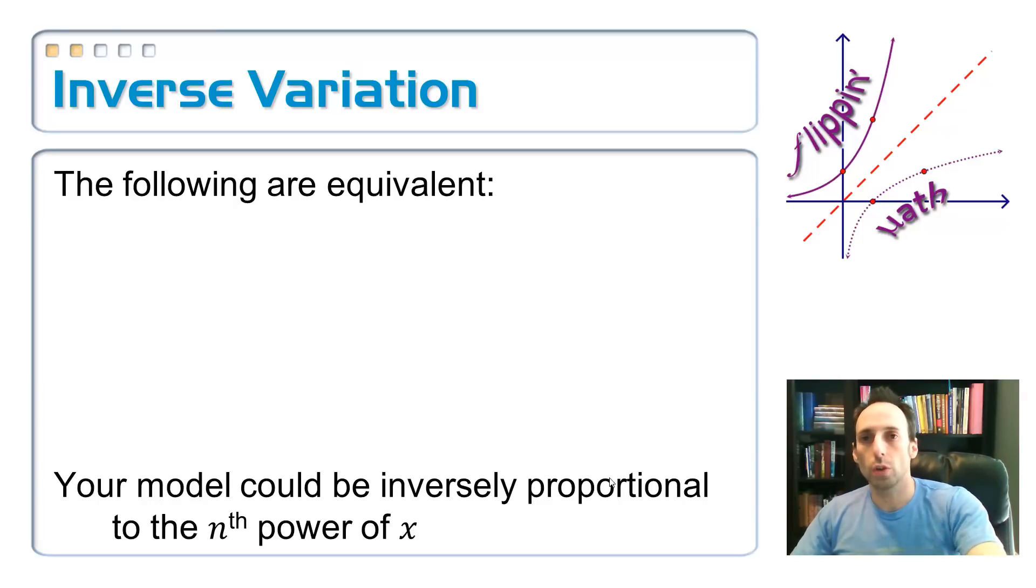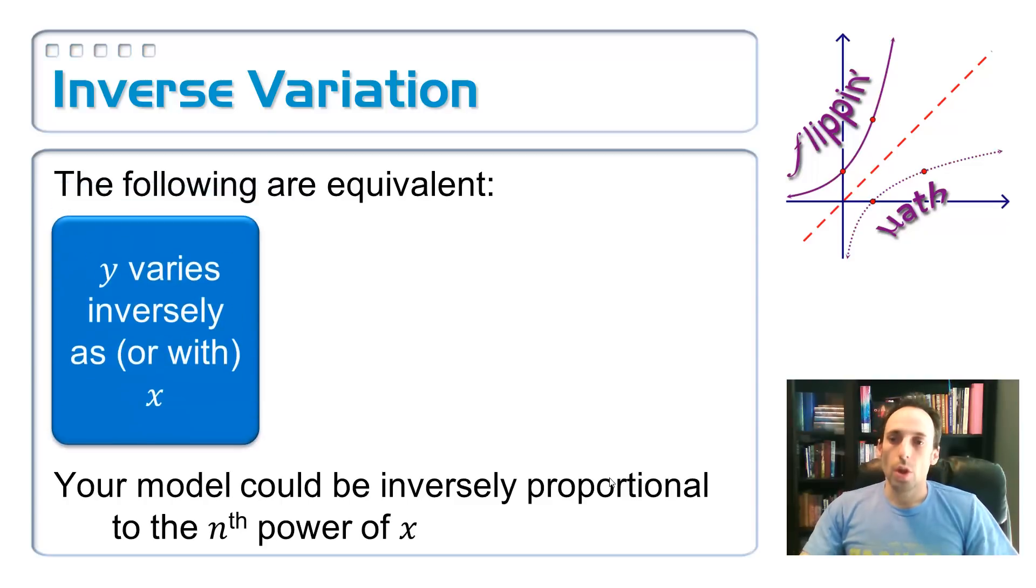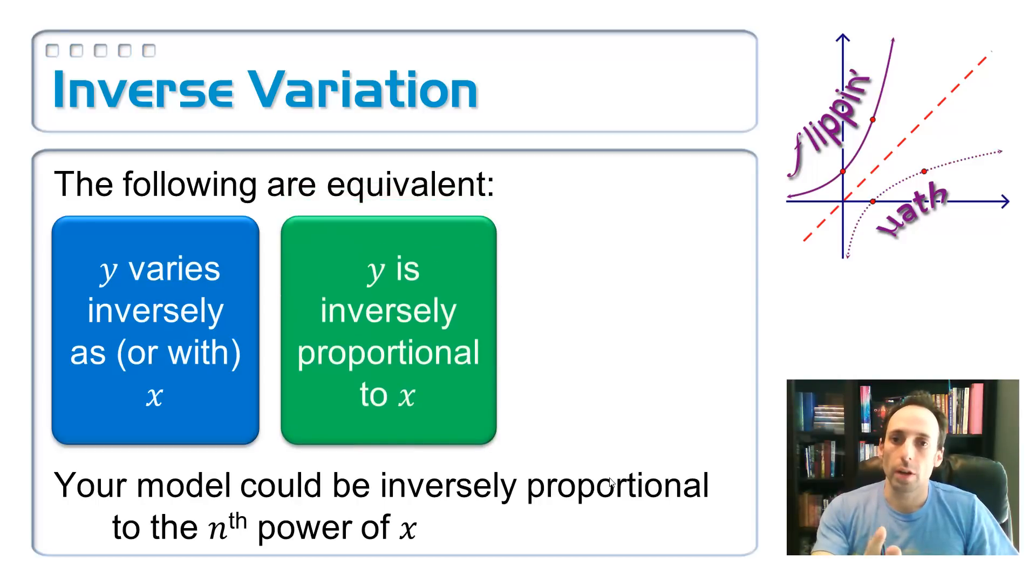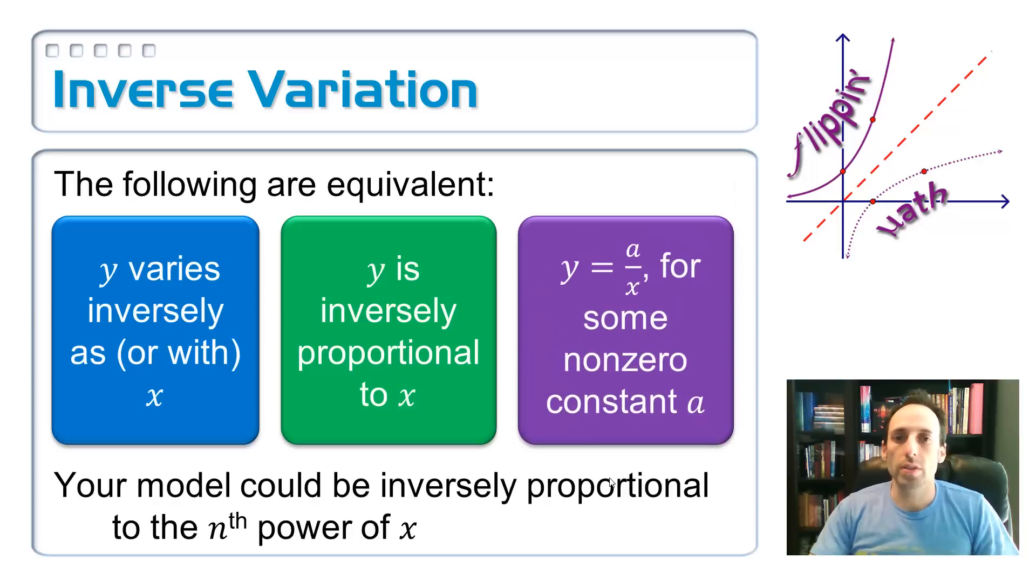So each one of these are equivalent to each other. The first one is, y varies inversely with or as x, or you might say it as y varies, is inversely proportional to x. And what this means is you're going to write an equation like this. y is equal to a over x, where a is the constant of variation.